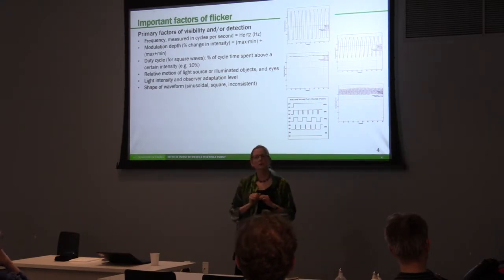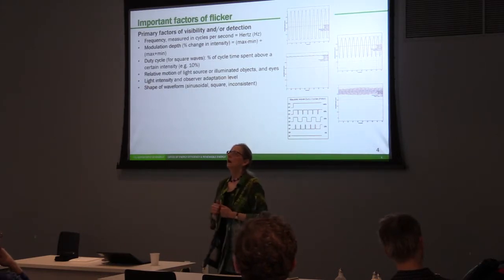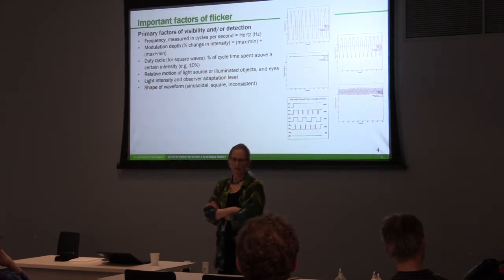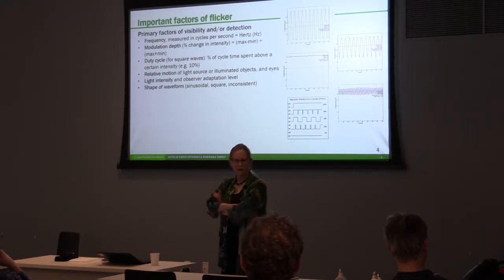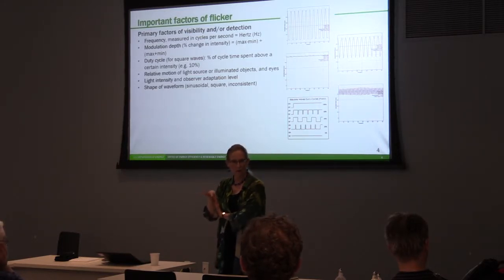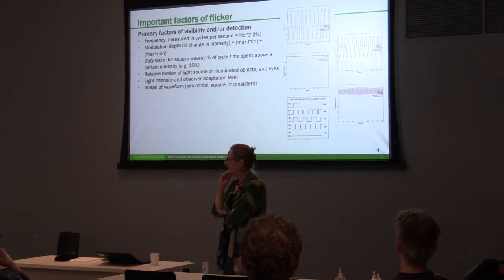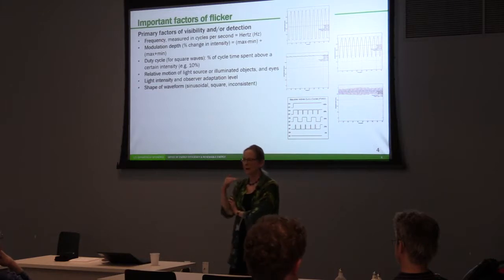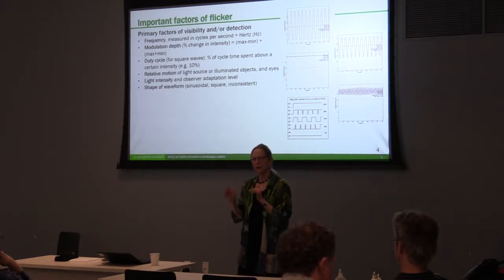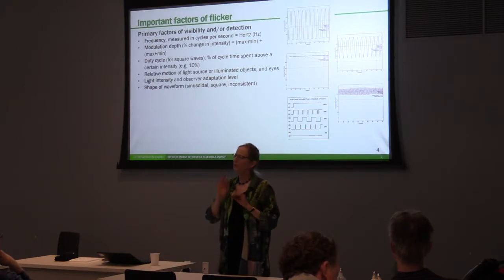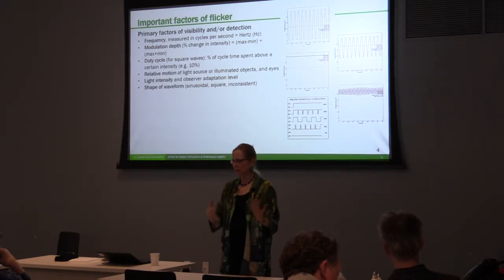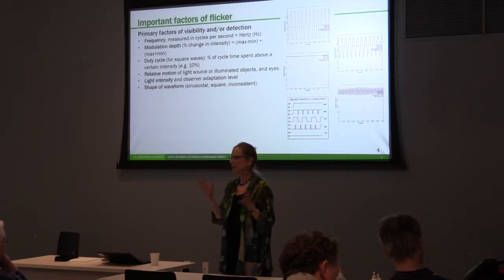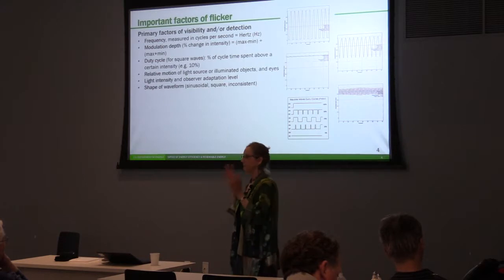Light intensity and observer adaptation level makes a difference. There are certain kinds of flicker that drive me absolutely bonkers — I happen to be personally sensitive to flicker. I find that in a landscape lighting environment where light levels are quite low, I don't pick it up. Under low light levels, you're less likely to be bothered by flicker. Maybe outdoor lighting under low light levels — under a foot candle or so, 10 lux — is something we worry about less than higher light levels.